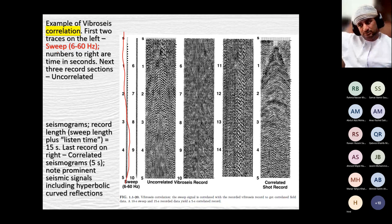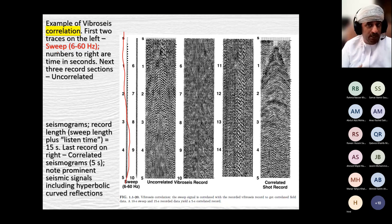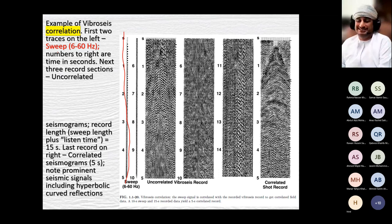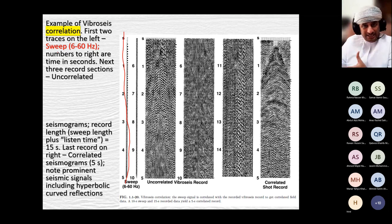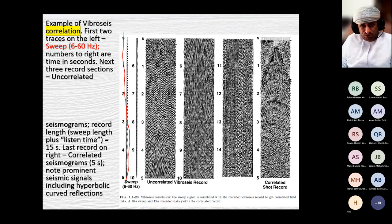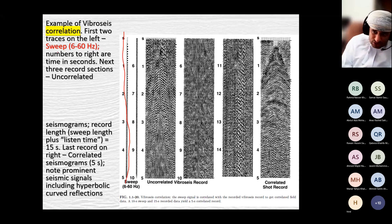A wide spectrum means the minimum to maximum frequency range is large. That's somewhat true about dynamite or a hammer shot, but not about a Vibroseis. Vibroseis is so controlled that we can specify exactly what frequencies to send to the ground — that's a characteristic Vibroseis has that other source types lack. If you expect the Earth cannot generate frequencies above 60 Hz, just send that range of frequencies.